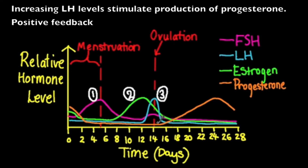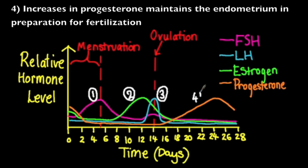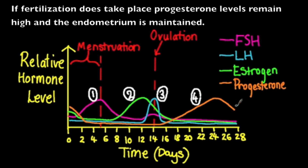The corpus luteum is a temporary endocrine structure formed following the release of the ovum from the Graafian follicles. Since the corpus luteum secretes progesterone, progesterone levels subsequently increase. The role of progesterone is to maintain the endometrium in preparation for fertilization. If fertilization does take place, the corpus luteum continues to secrete progesterone and continues to maintain the uterus lining.